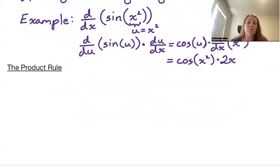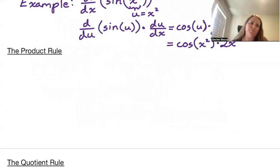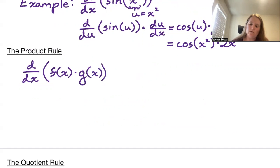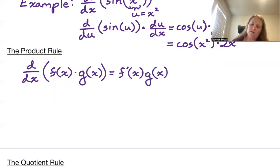Next up, we have our product rule. The product rule says that if we wish to take the derivative of f of x times g of x, this is equivalent to f prime of x times g of x plus f of x times g prime of x.